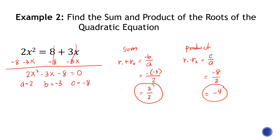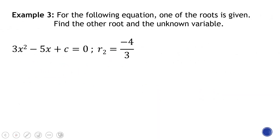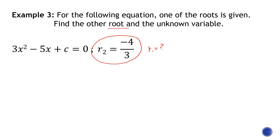Now there are instances where you might encounter this kind of question: for the following equation, one of the roots is given — find the other root and the unknown variable, which here is c. First let's identify a, b, and c. Since c is missing, we will use the sum formula first.